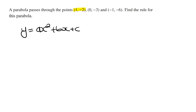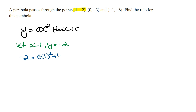Looking at the first coordinate (1, -2), this means that when x = 1, y = -2. Subbing into the general rule, we get: -2 = a(1²) + b(1) + c, which simplifies to -2 = a + b + c. This is our first equation in terms of a, b, and c.